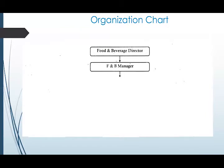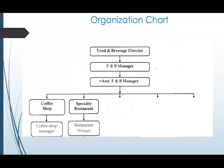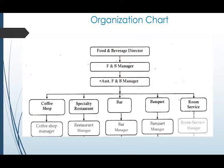Under the Food and Beverage Director, we have the F&B Manager, who manages all the restaurants and outlets of the Food and Beverage Service Department. Under the F&B Manager, we have the Assistant F&B Manager, who assists the F&B Manager. In the absence of the F&B Manager, the Assistant F&B Manager will be the in-charge. Under the Assistant F&B Manager, we have various outlets: Coffee Shop, Specialty Restaurant, Bar, Banquets, and Room Service — each handled by their respective managers.